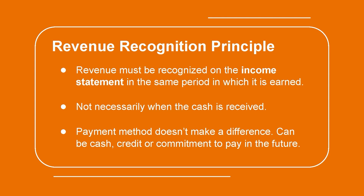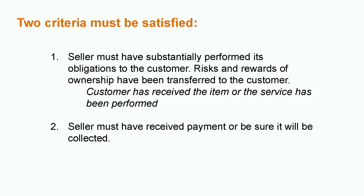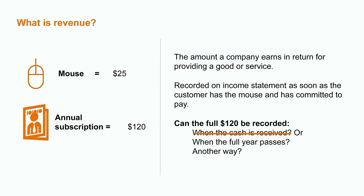There are two general criteria for revenue recognition. The first is that the seller must have substantially performed its obligations to the customer, meaning the risks and rewards of ownership have been transferred. In the case of the magazine membership from earlier, this criteria has not been met at the time of the sale, since I'm obligated to provide you with a magazine each month for the whole upcoming year. The second criteria is that the seller must have either obtained monetary payment from the sale, or if they haven't received the cash yet, they must be reasonably certain that they'll receive payment. In this case, the criteria has been met, since I received an upfront payment of $120 cash for the annual magazine subscription. Since both of these two criteria have to be met in order to record the revenue, in this case the company would not be able to recognize the revenue at the time of sale.